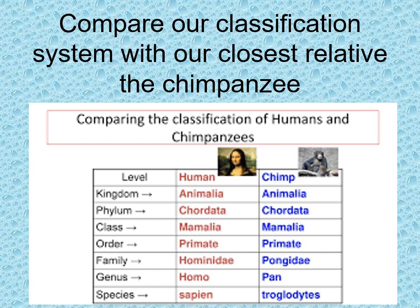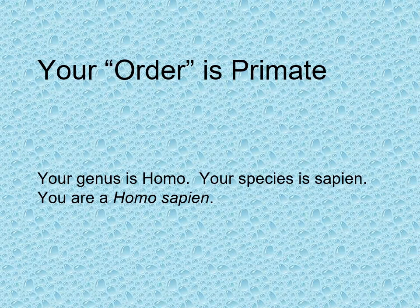Our genus is Homo, our species is sapien — we are Homo sapiens. Chimpanzees are Pan troglodytes; that is their genus and species. Every living organism has a genus and a species under this system. Your order is primate, your genus is Homo, your species is sapien — you are Homo sapiens.